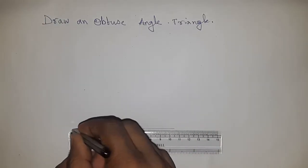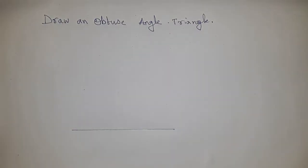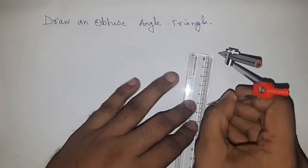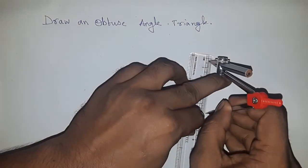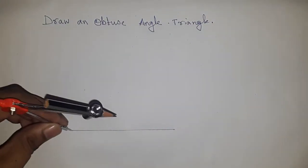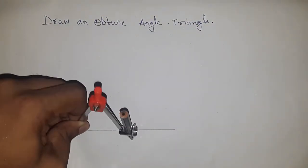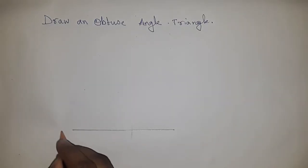First of all, draw a line of any length. Now, take six centimeters for the length of a side. This is line AB.